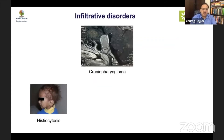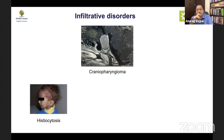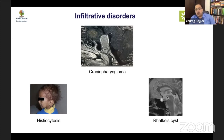Infiltrative disorders like histiocytosis are important between two and five years of age — look for rash, seborrhea, polyuria, polydipsia, diabetes insipidus, and hepatosplenomegaly. Beyond six years, always think of larger lesions like craniopharyngioma. If you have a lesion with a solid and cystic component, calcification, and a suprasellar rim, think of craniopharyngioma. We can also have a Rathke's cleft cyst, a congenital malformation from an abnormality in the Rathke's pouch with adenoidal epithelium.